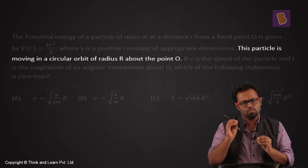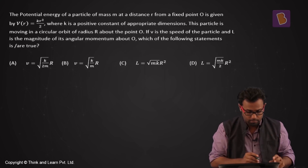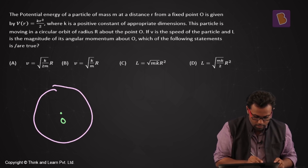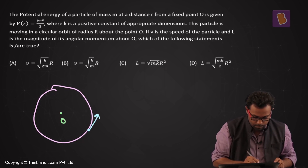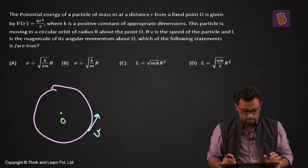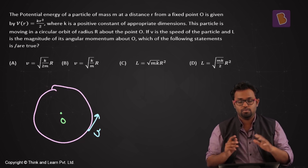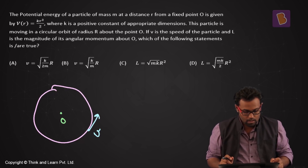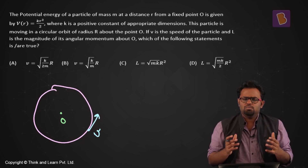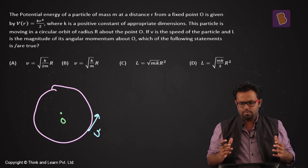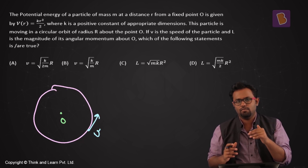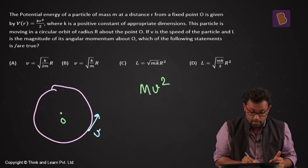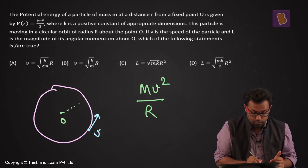Looking at this problem, there's a particle moving in a circle of radius capital R. Let me draw that — there's a particle moving around in that circle with speed V. For a particle moving in a circle, it must have a centripetal force, and that centripetal force is mv²/R because it's moving in a circle of radius capital R.